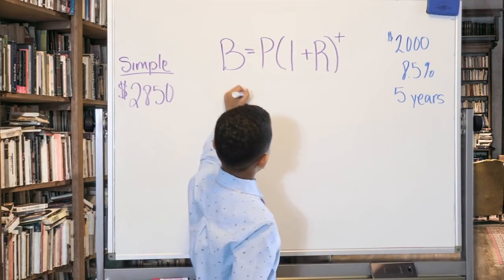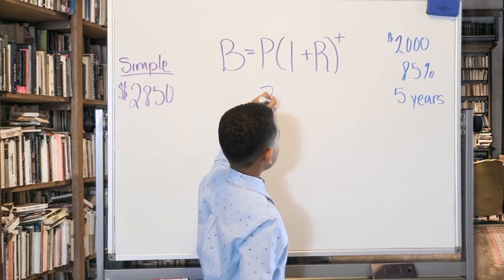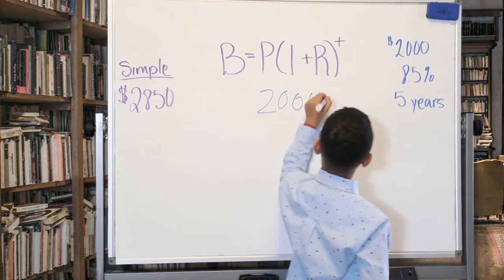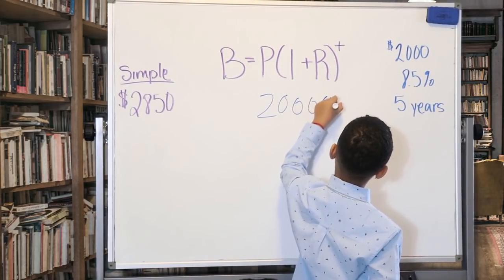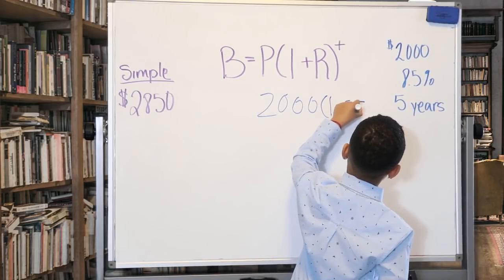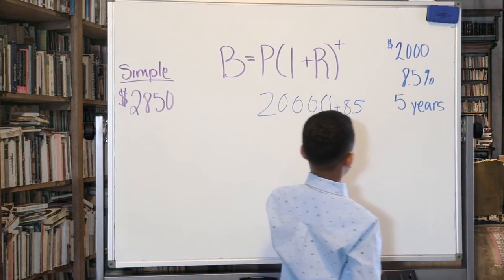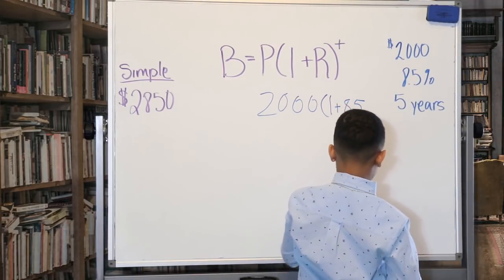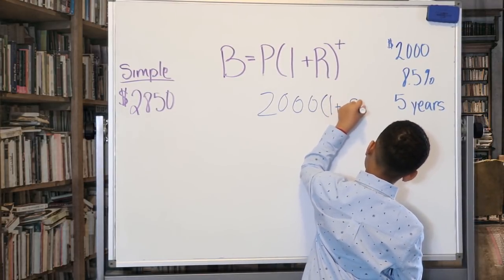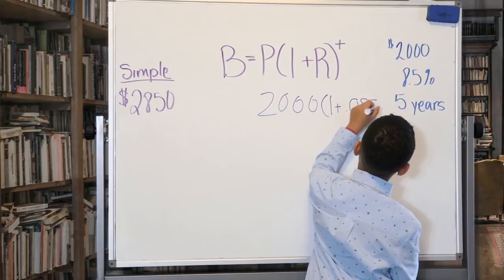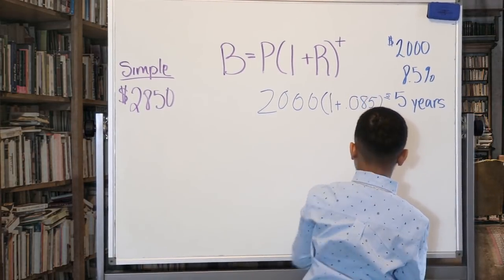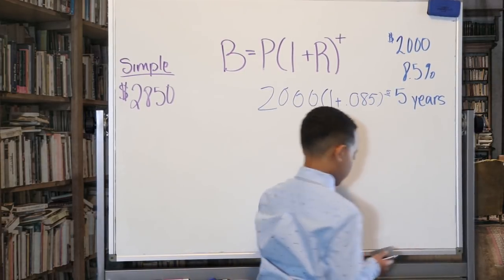Two thousand, one plus 0.085, and 5 is the exponent. So we need a calculator.